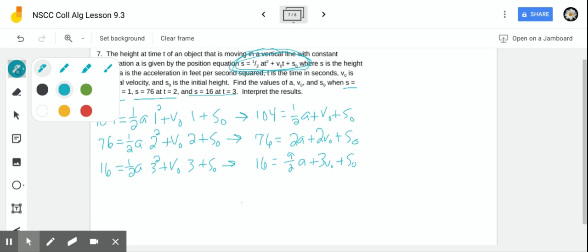Those are the three equations that we have to work with. So instead of X, Y, and Z, we have A, V sub O, and S sub O. We need to get rid of one of the variables. I want to get rid of the S sub O.